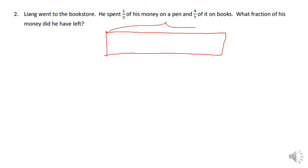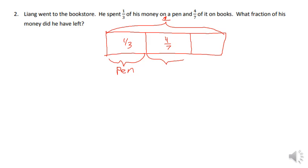The total here is all of Lang's money, and since it's asking what fraction he had left, all of Lang's money is going to be one whole. He spent one third of his money on a pen, and he spent four sevenths of his money on books, and they want to know how much was left.